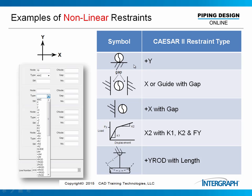Here is a plus Y support. The pipe can rest on the support or it can lift off. So in the Y direction, sometimes the support is active — it wants to push down. But if the pipe wants to move vertically upwards, it is free to do so. That is the nonlinear situation.